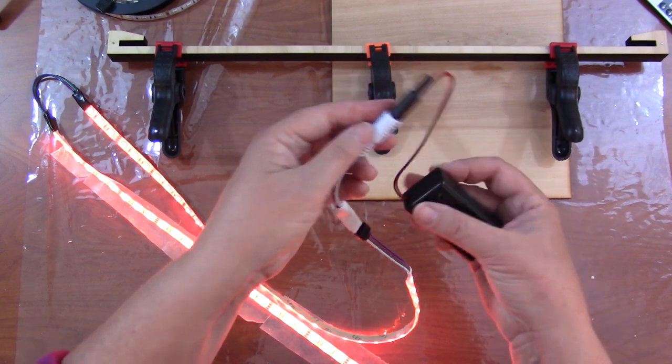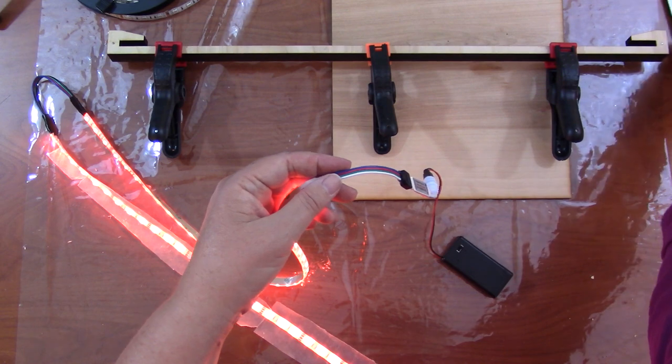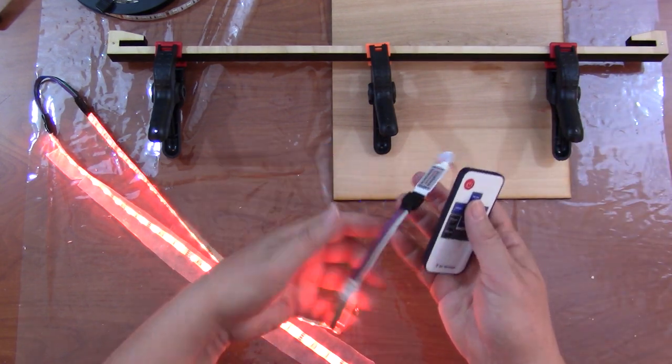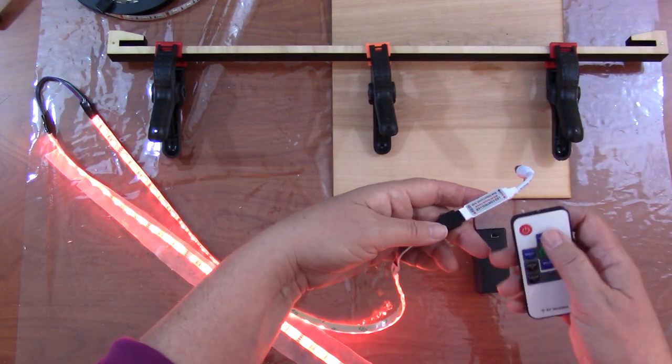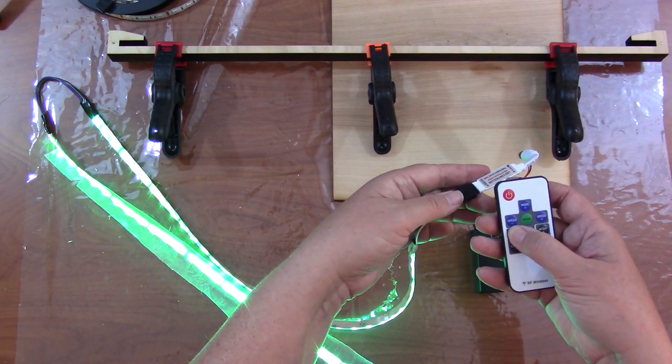The white part of this assembly is the receiver. It plugs directly into the end of an RGB light set. That little component there is the actual receiver. And you can see how it changes the color of the lights.